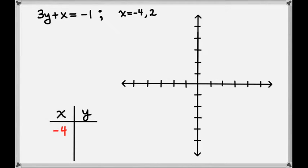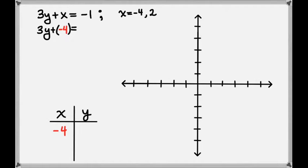The first thing we want to do is figure out the y value that corresponds with the x value negative 4. We'll do that by plugging in x equals negative 4 into our equation. So we have 3y plus negative 4, and that equals negative 1.